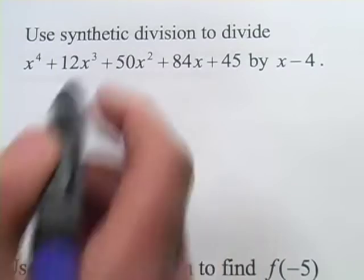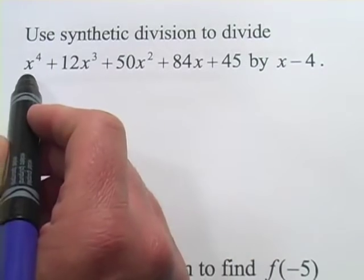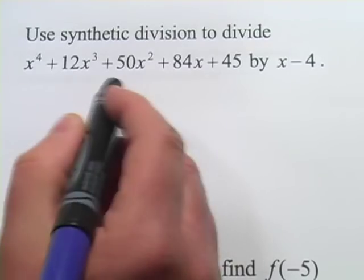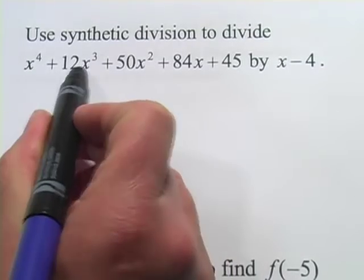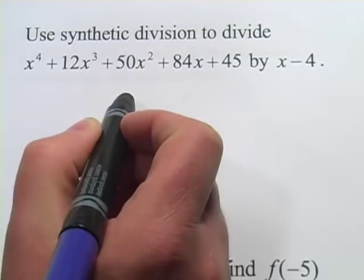When we set up our synthetic division, the first step is to write all the coefficients of the terms in order, leaving no gaps for any degree. In this case, we've got terms for all the degrees, so we don't have to fill in with any zeros.